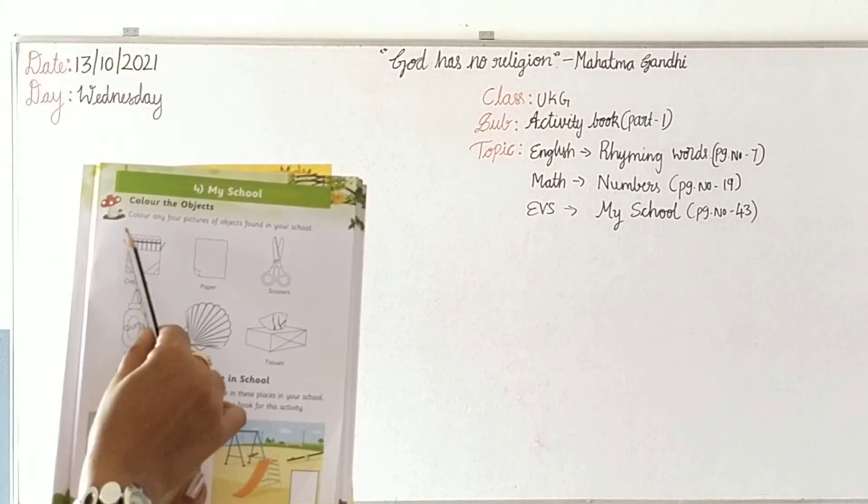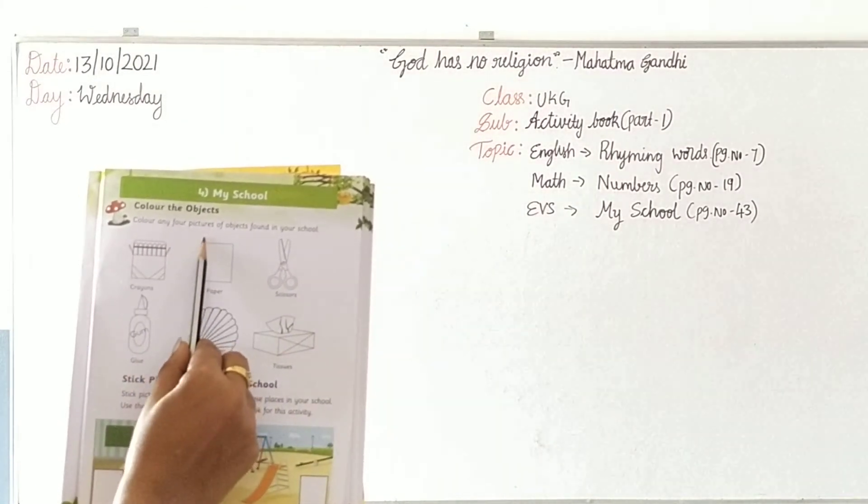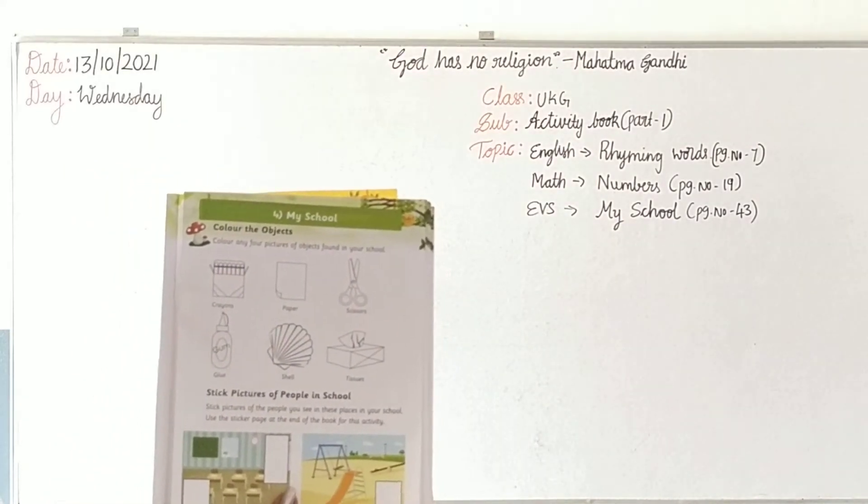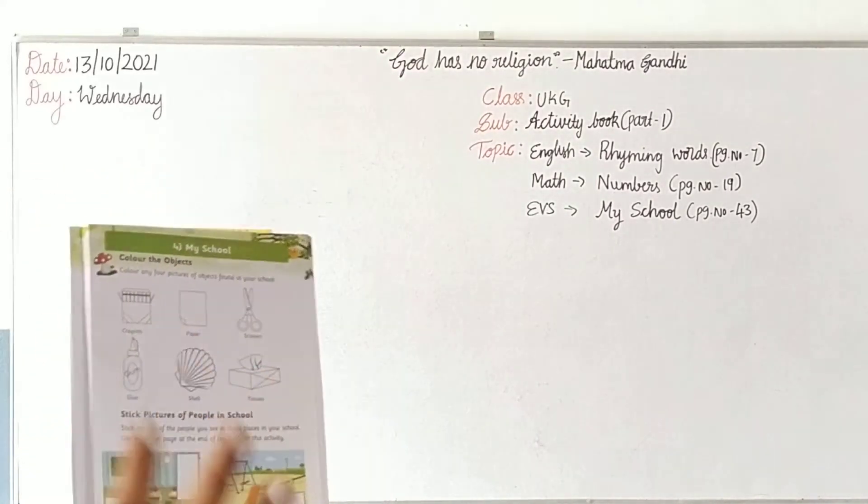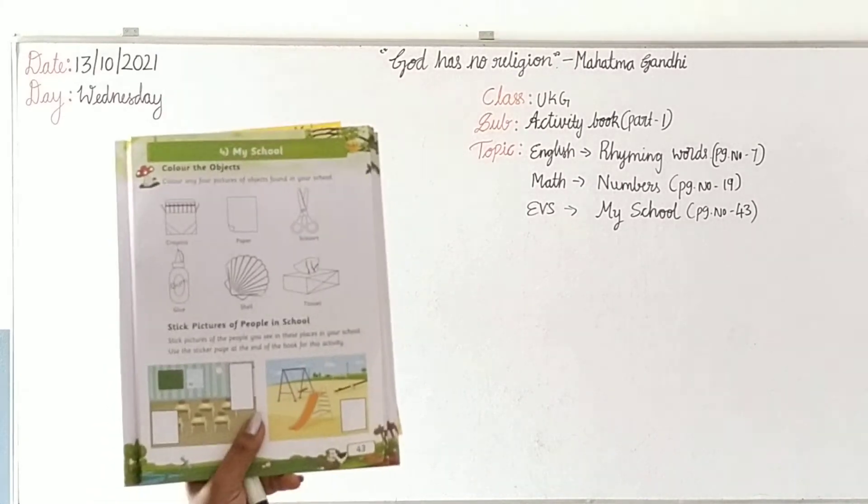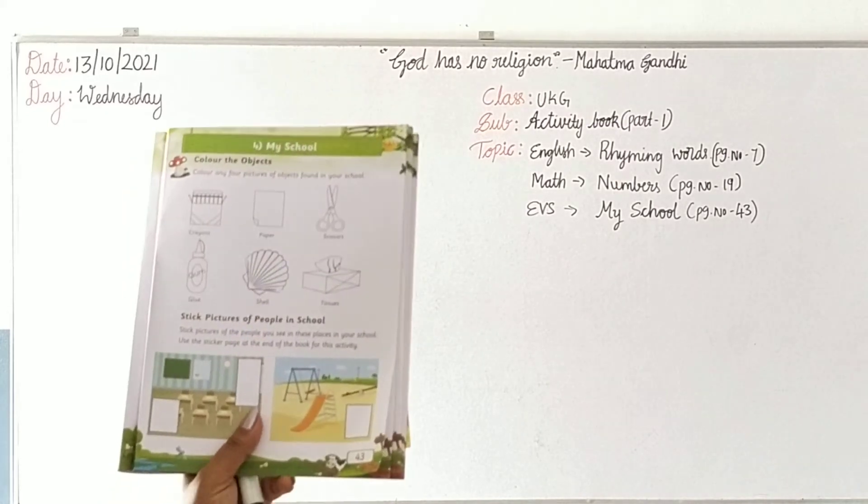Colour the objects. Colour any four pictures of objects found in your school. We have to colour only four pictures or four objects which we are seeing in our school or which you have seen in our school.